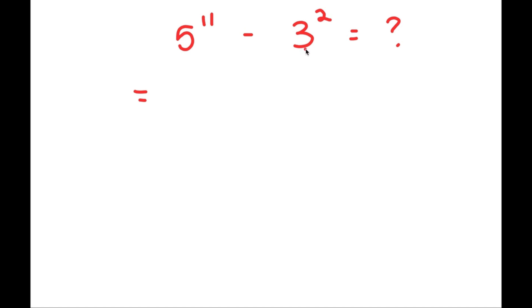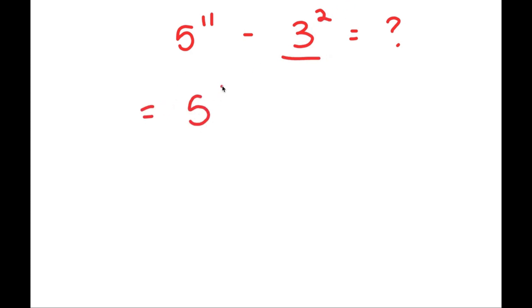So instead of doing that, I have another method to solve this. First, I'm actually just going to solve 3 squared, which is simple — it's 9. So this turns into 5 to the power of 11 minus 9.